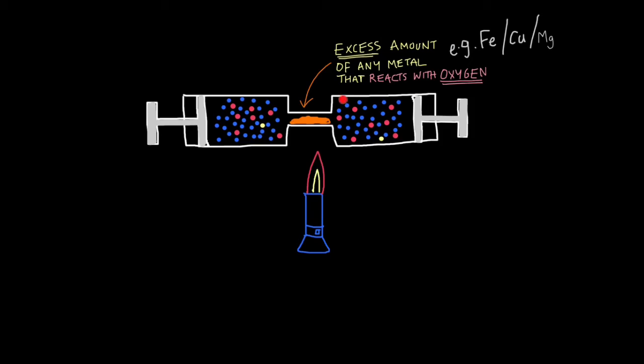Let's take another example. So here we've got two syringes, which are sort of joined together. In the middle, I've put another oxygen-hungry metal. It's really important that you use an excess amount of metal. What that means is, make sure you use more than enough, so that all the oxygen in this airspace reacts with the metal. If you don't use an excess amount, there's a chance that not all the oxygen will react, and therefore you'll get that unrepresentative reading.